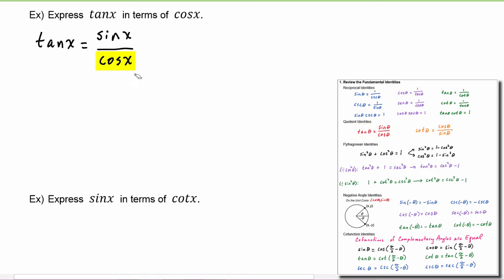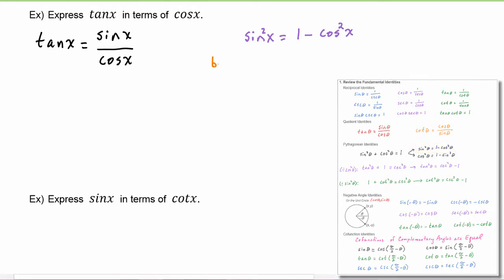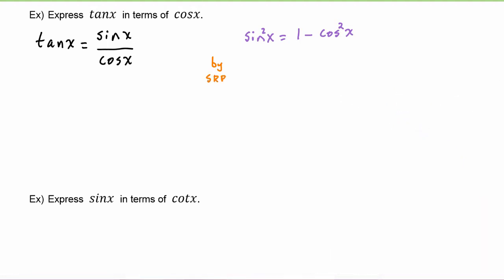Now this cosine of x in the denominator is just fine because that's in terms of cosine of x, but this sine of x can't stay because our final answer can only be in terms of cosine of x. We know that we have a Pythagorean identity that relates sine and cosine: sine squared of x is equal to one minus cosine squared of x, and by the square roots property we can say that sine of x is equal to plus or minus the square root of one minus cosine squared of x.